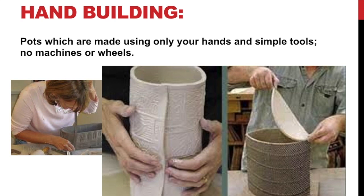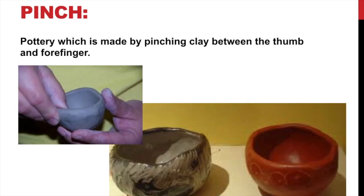Hand building is what we do in class — it means making pottery with only your hands or simple tools. No machines, no wheels, no plaster molds. Here are some examples of hand building; in these cases they appear to be using the slab technique, which we'll cover in a moment.